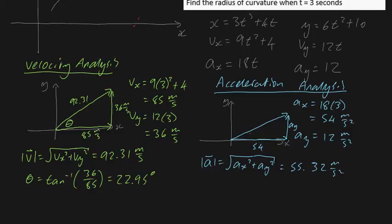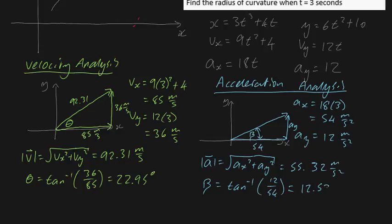Let's also define angle beta — the angle at which the acceleration vector is from the horizontal. Beta equals the inverse tangent of ay over ax, which is 12 over 54. Plugging that into the calculator gives beta equals 12.53 degrees. So the acceleration vector is at a shallower angle than the velocity vector.